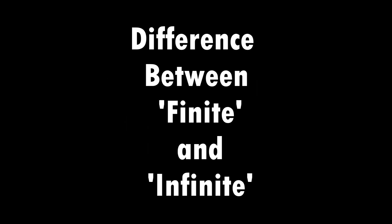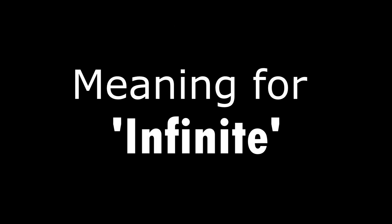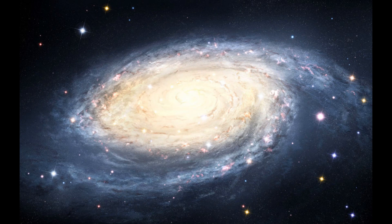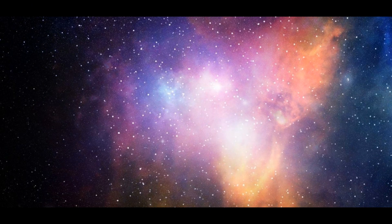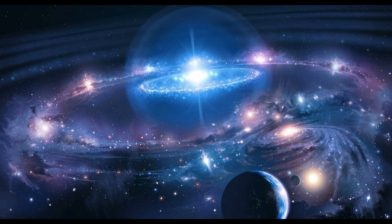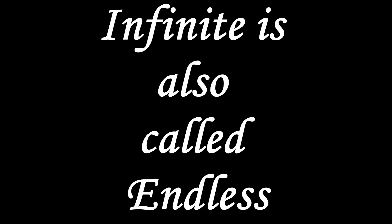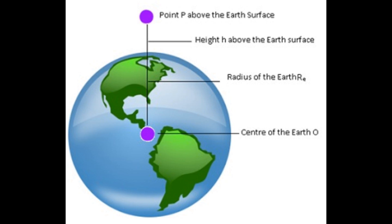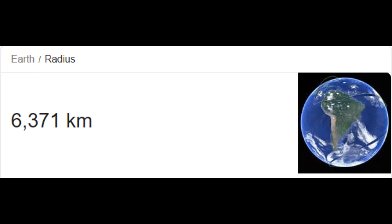Finite Element Analysis — 'Finite' is the first word. Finite and infinite: in this field, we compare the finite issue and the Earth. For example, the total radius of the Earth is 6,371 km. That is a finite value — this is a word example.